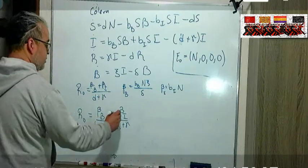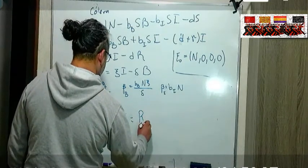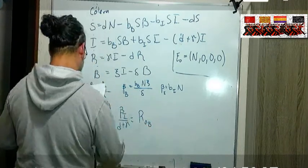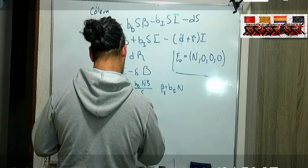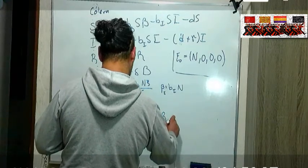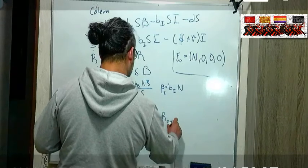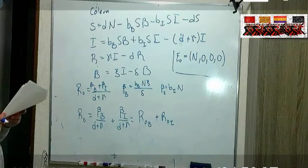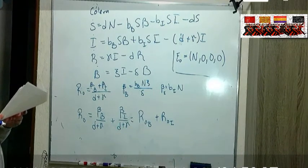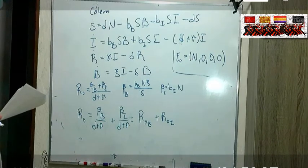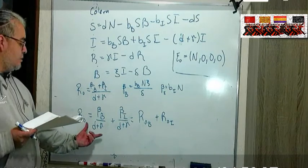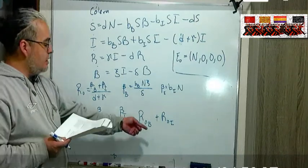Ahora fíjense que este R0 lo podemos separar, beta B sobre D más gama más la beta I sobre D más gama, y podemos escribir esto como el R0 que se debe a la parte bacterial y el R0 nada más de la parte de los humanos infectados, de los infecciosos.